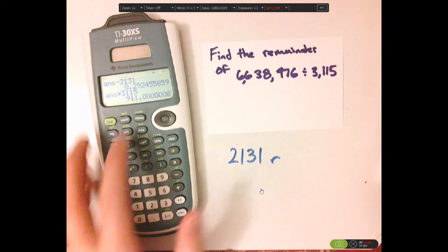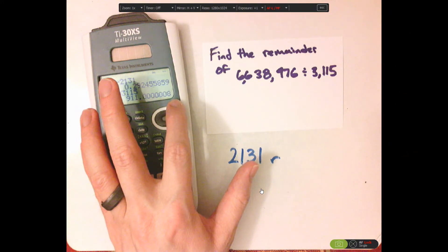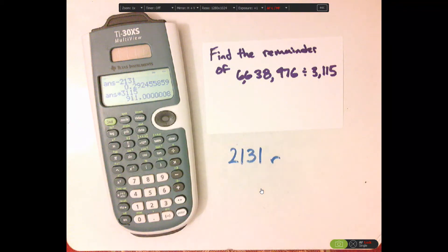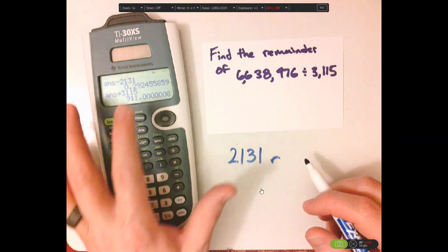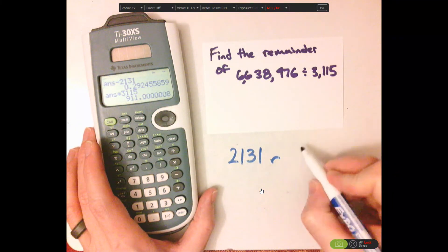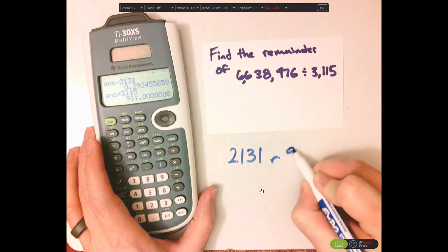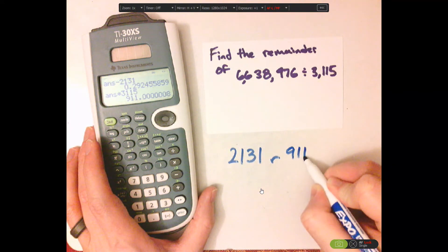And notice that it goes to some odd decimal places. That's because the calculator is needing to round, because the numbers are so big. So, the remainder would be 911.